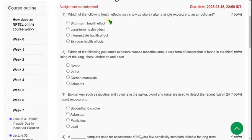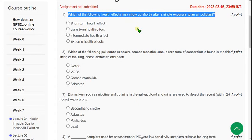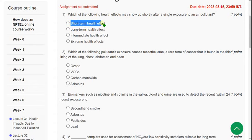First question: Which of the following health effects may show up shortly after a single exposure to an air pollutant? For the first question, the correct answer is first option: short-term health effect, or it's also called immediate health effect, not intermediate. It is immediate or short-term. So option one for the first question, first option is correct.